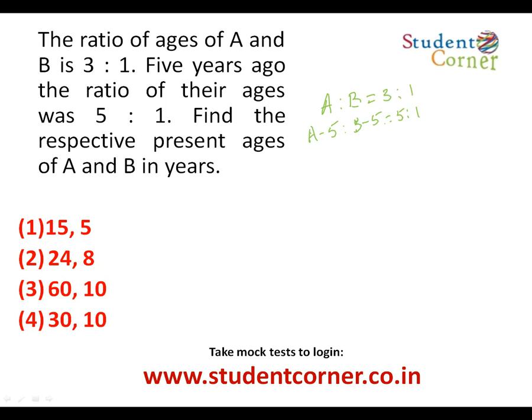First condition, second condition — let us substitute. Try 15 and 5: yes, 3 is to 1. Now let us subtract: 15 minus 5 is 10, and 5 minus 5 is 0. So you cannot have the first option as an answer.